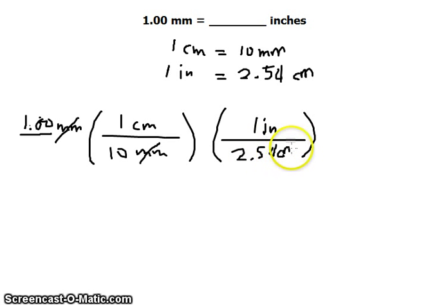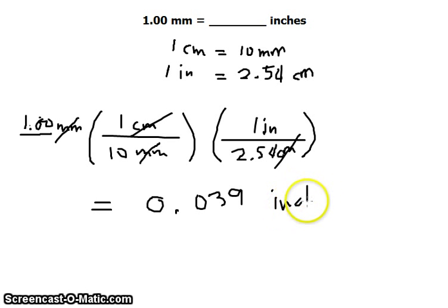Now we can also cancel the unit in centimeters, and what is left is the unit in inches. Performing the operation, we get 0.039 inches. That's our final answer for this problem.